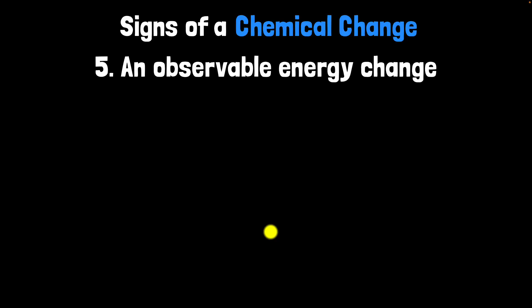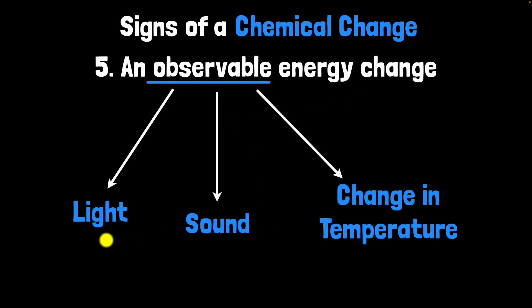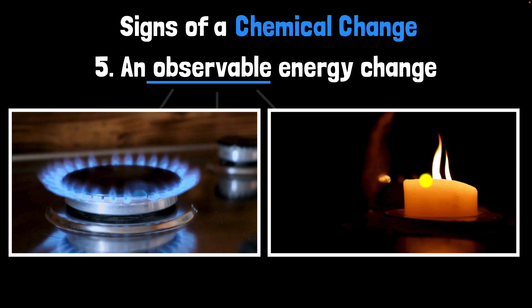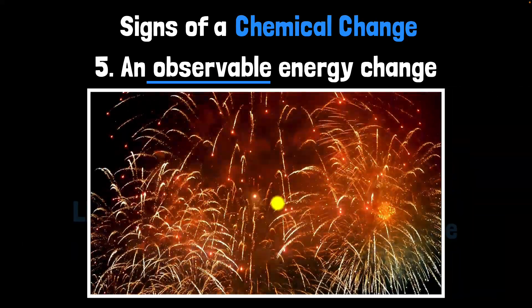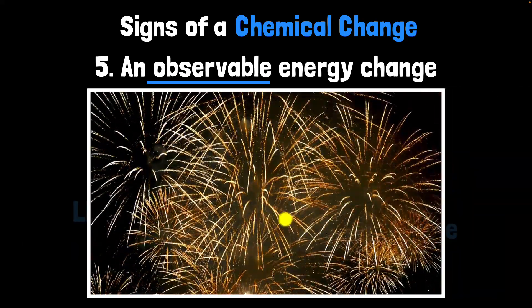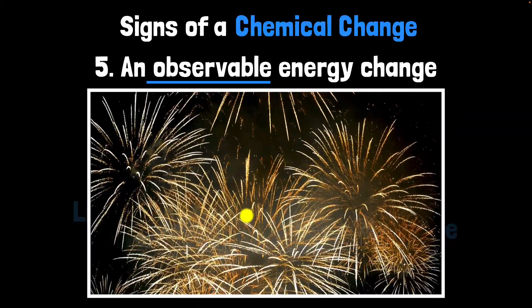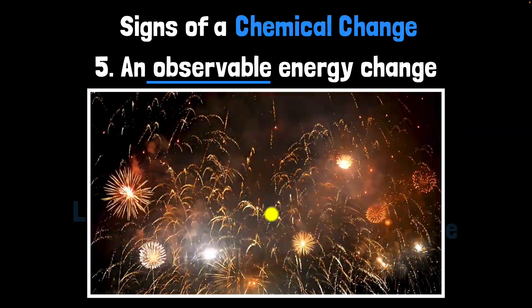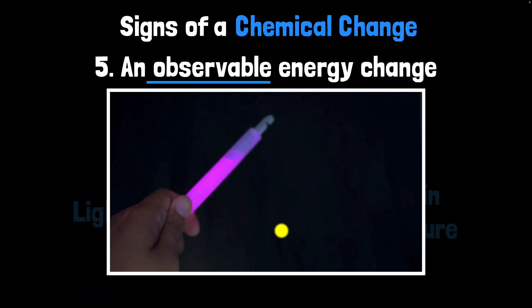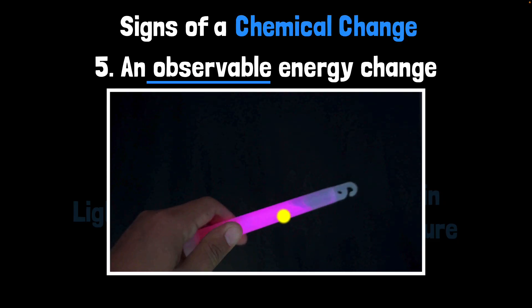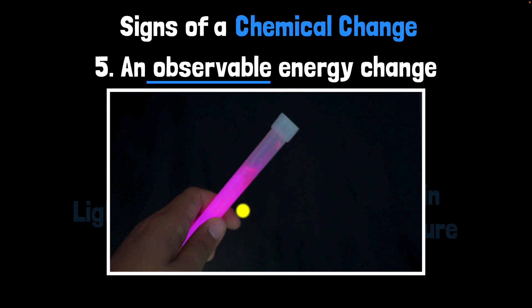Finally, we can have an observable energy change. When we say observable, we could have light being produced, some sound being produced, or a change in temperature. For example, when you light a gas stove or a candle, new substances are produced and that produces a change in energy — light. When you have firecrackers, it's a chemical change: you have light, sound, and certainly a temperature change. And glow sticks, when you crack them, it's a chemical change — new substances are formed and you get light.